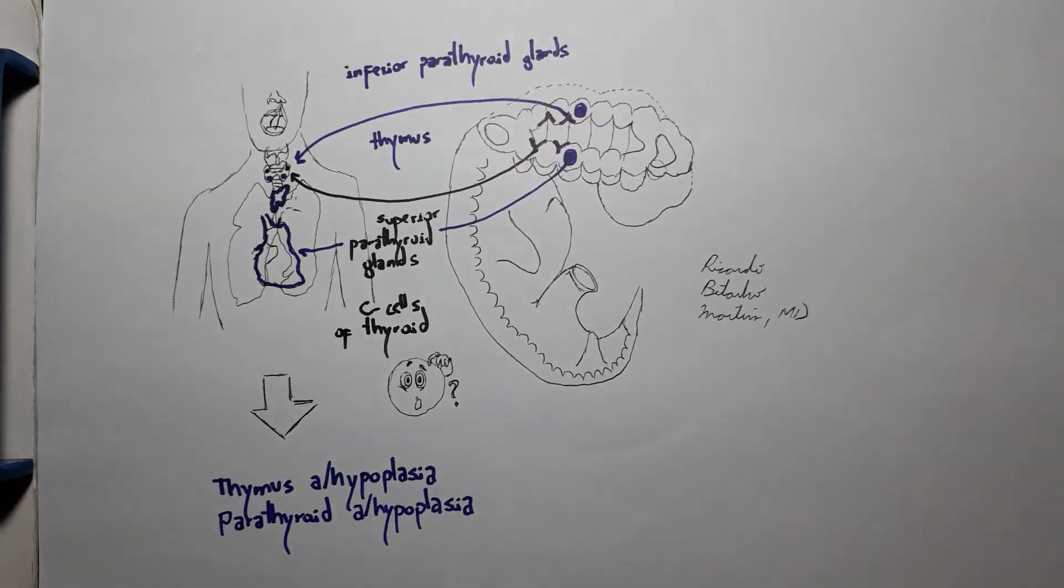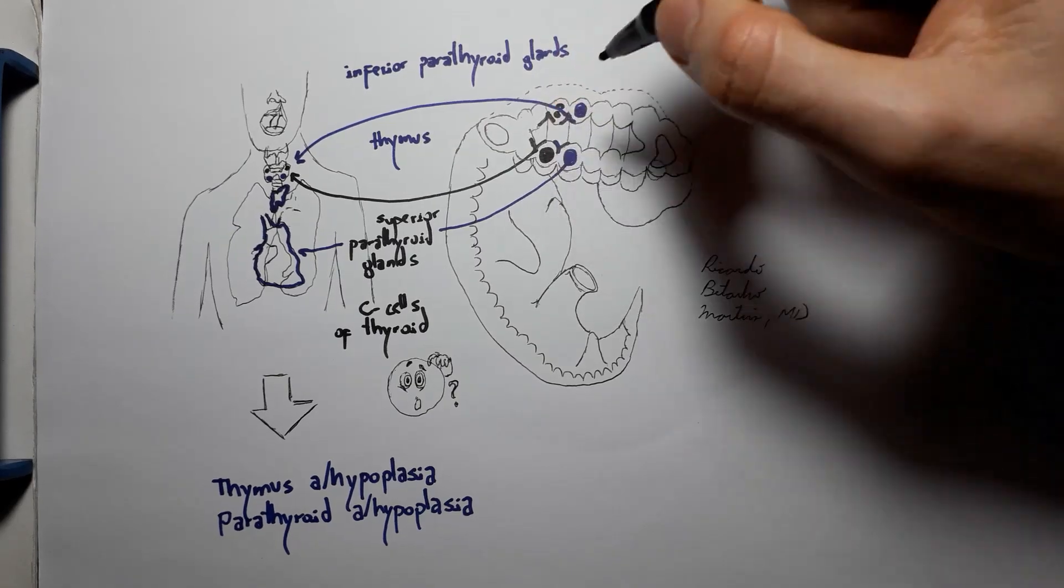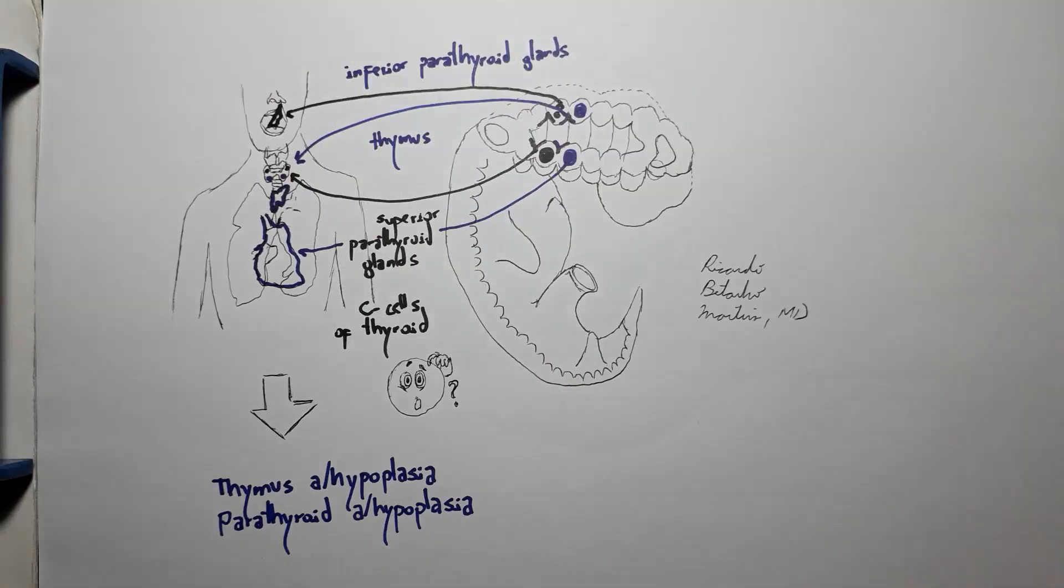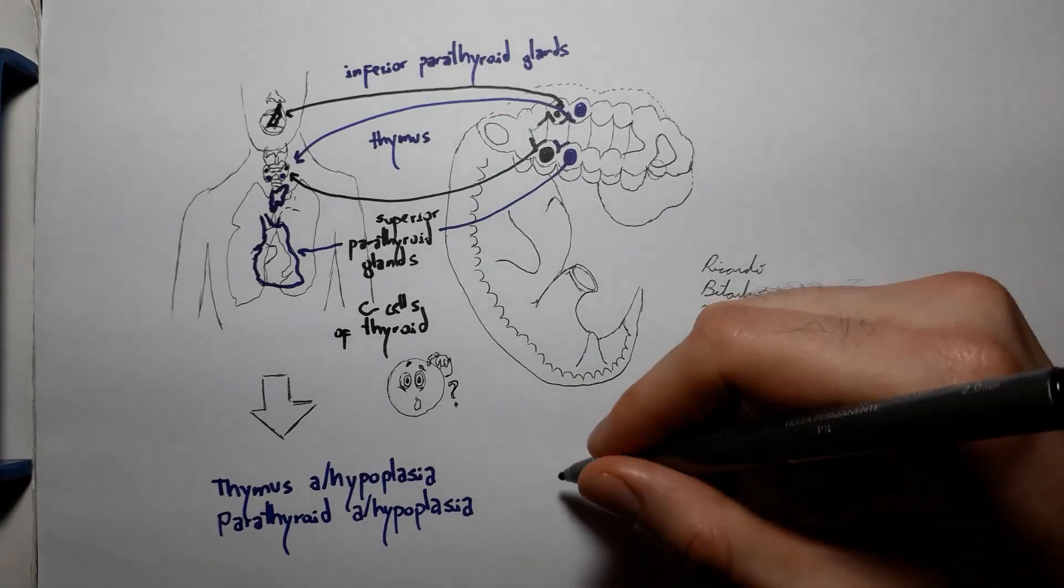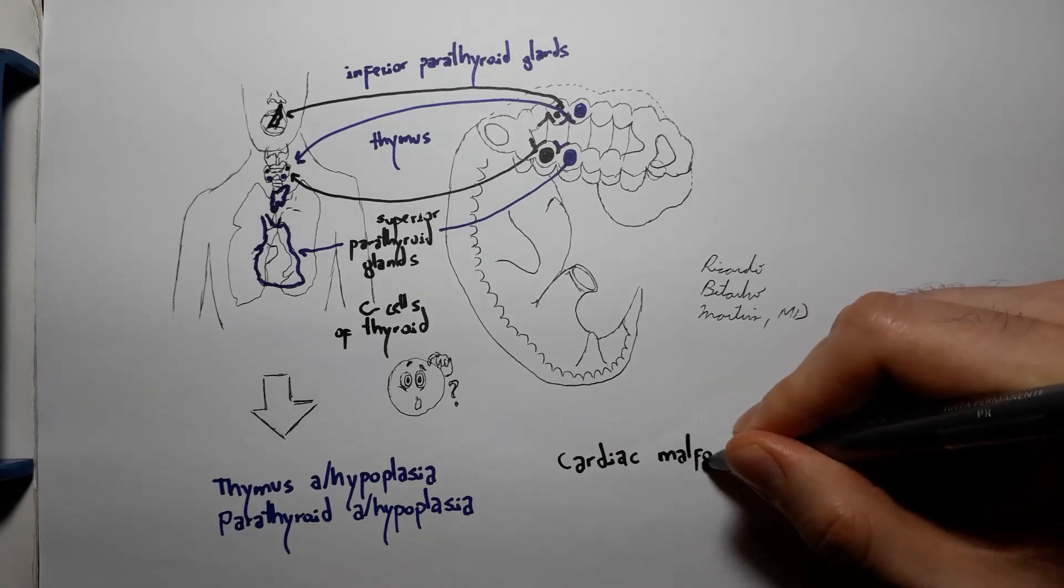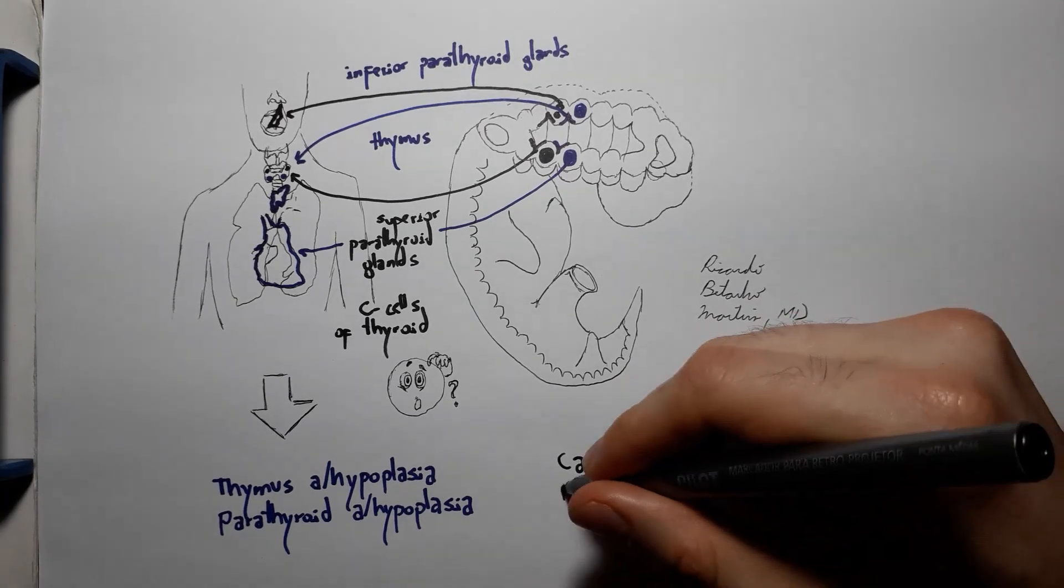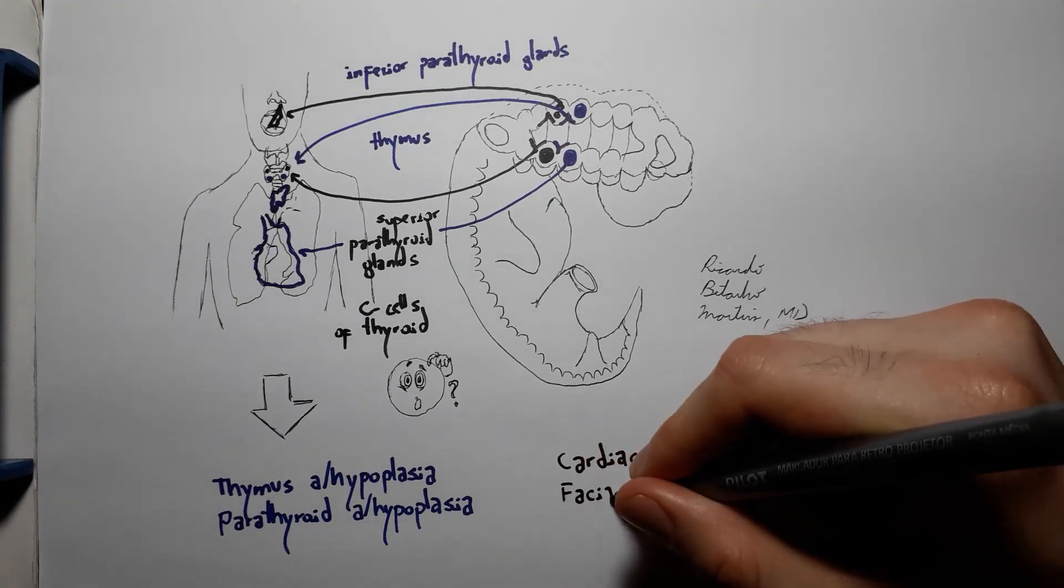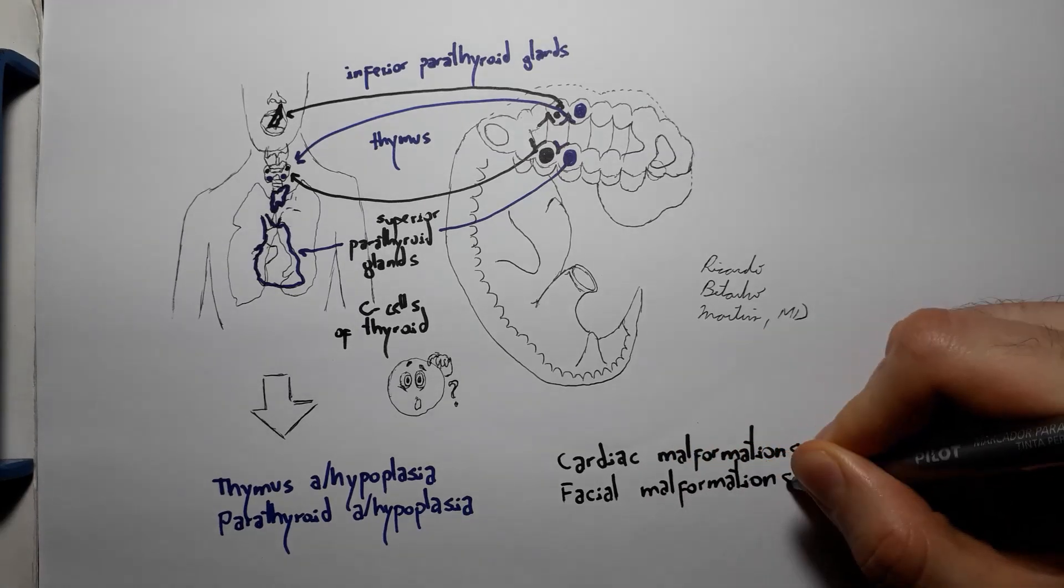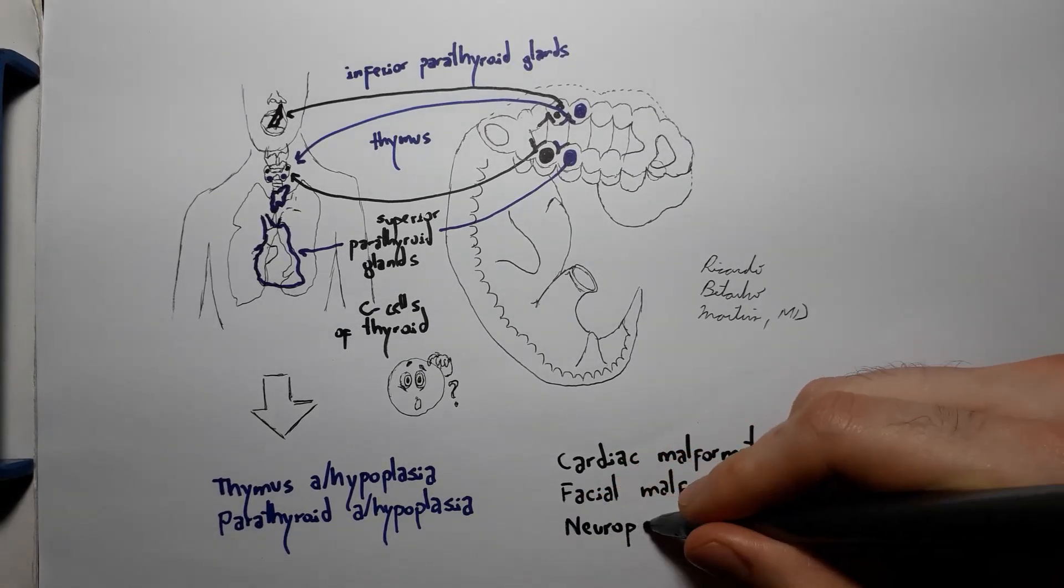For somewhat unknown reasons, the deletion of the genes on 22q11.2 is also strongly correlated with neuropsychiatric disorders, especially schizophrenia. So this leaves us with a disease that arises from the developmental failure of the third and fourth pharyngeal pouches, leading to thymus hypoplasia, parathyroids hypoplasia, abnormalities of the heart and great vessels, abnormalities of the face, and neuropsychiatric disorders.